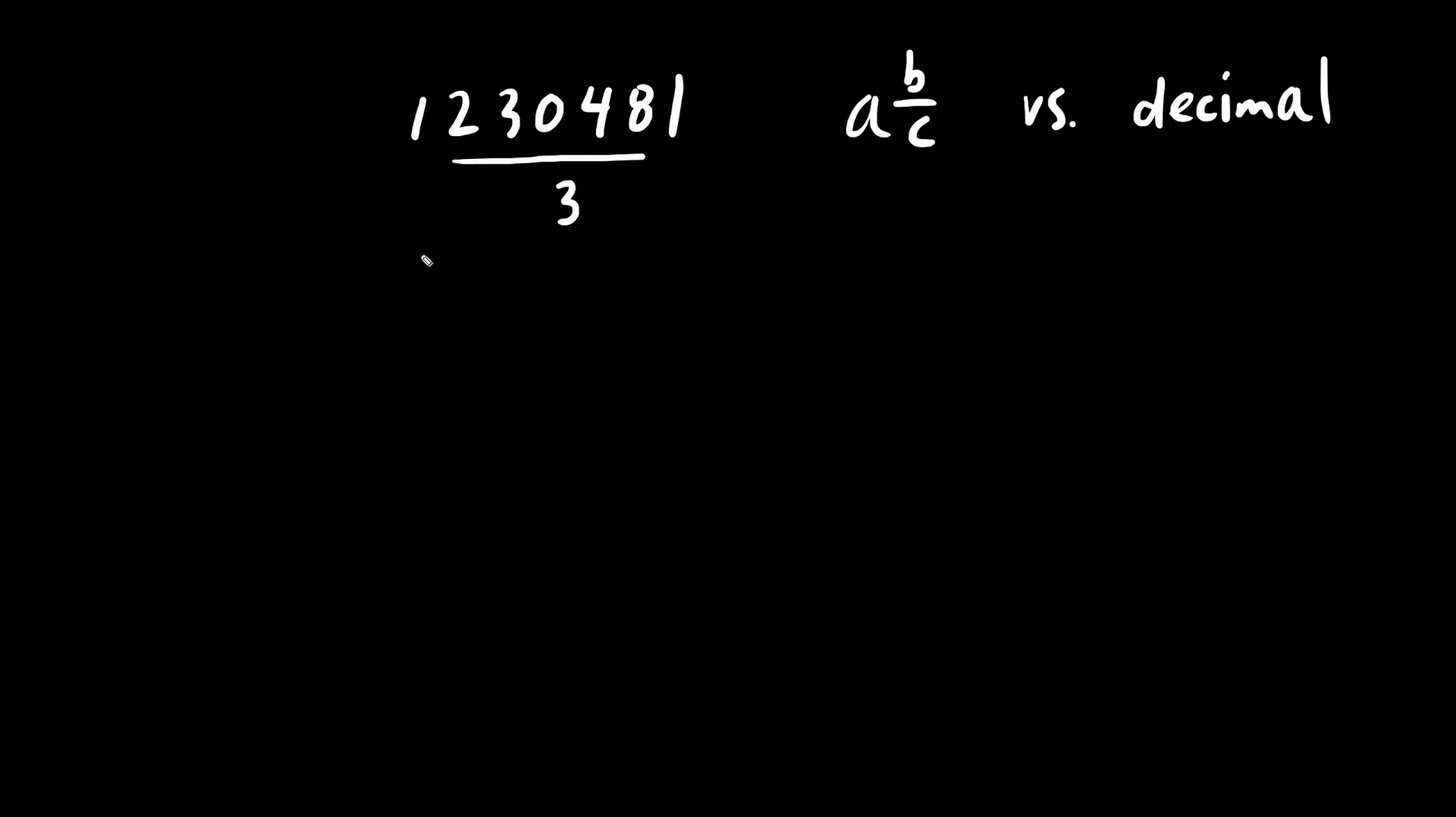All right, let's try one more. We have long division. And the goal is to get a nice mixed fraction and a decimal answer. So the numerator is quite large. One, two, three, zero, four, eight, one. All divided by three. Make sure we don't mix these up.